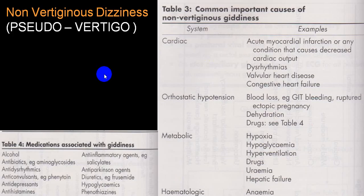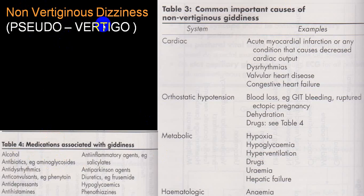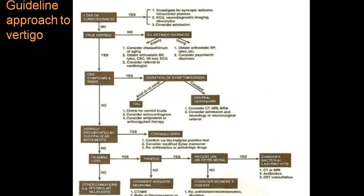Non-vertiginous dizziness, also called pseudo-vertigo, can be due to cardiac conditions, orthostatic hypotension, metabolic conditions like hypoglycemia, hyperventilation, drugs such as sedatives, anemia, alcohol, or aminoglycosides. These are called pseudo-vertigo because the person feels dizzy but it is not due to vestibular or peripheral nerve — what we call vestibulocochlear — involvement.